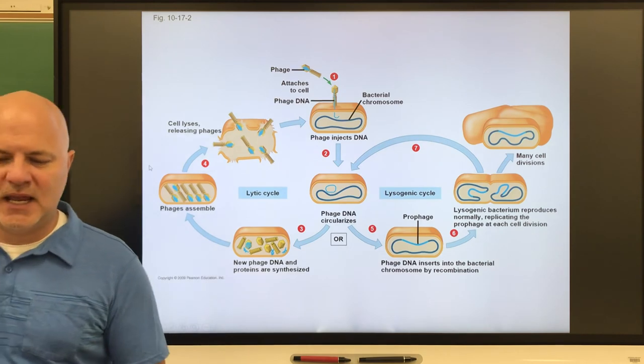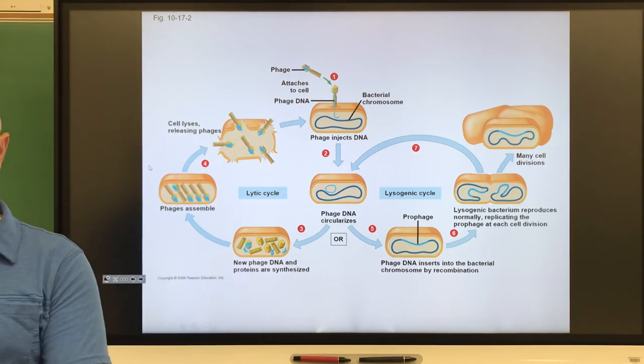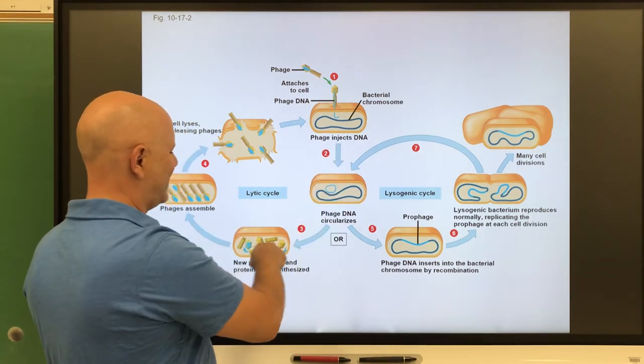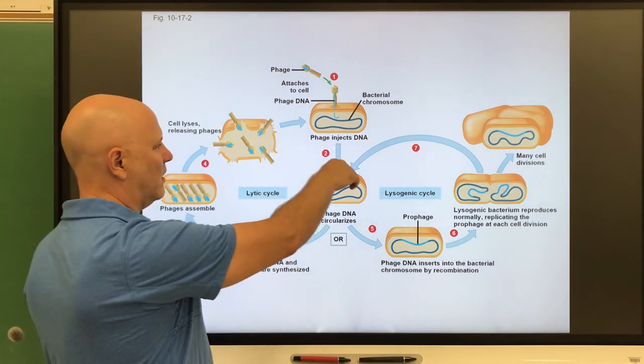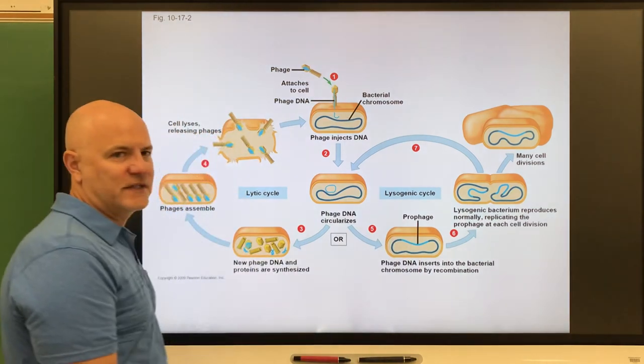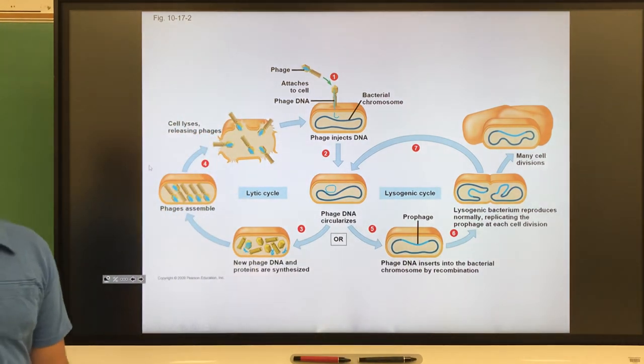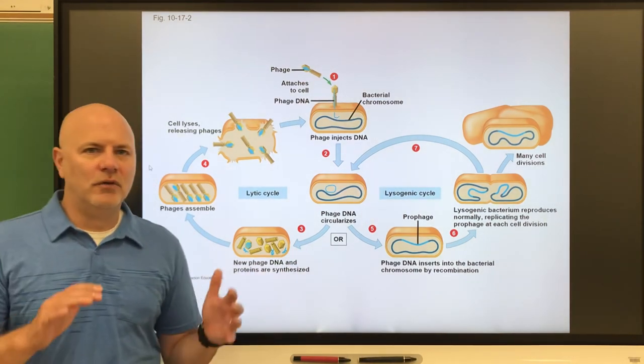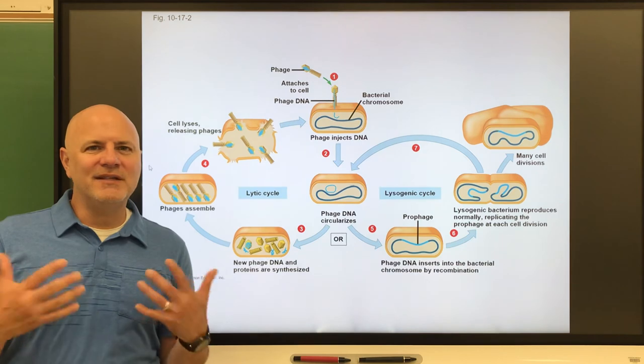Next is a lysogenic infection. A lysogenic infection is a viral infection in which the viral DNA is incorporated onto the host cell's DNA. Here, instead of just coming in and causing this to occur, what happens is that viral DNA gets put onto the host cell DNA. That viral DNA remains latent, so nothing's going to happen for a while until there's some stressor that causes this to occur.